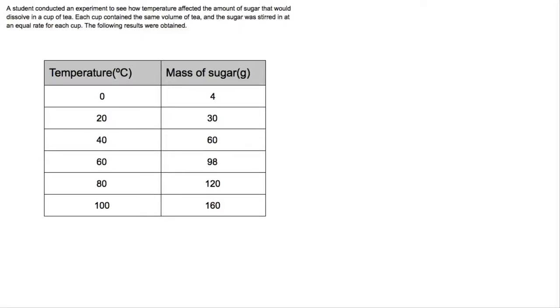In this lesson we're going to look at how to draw a graph from a table of results. A student has conducted an experiment to see how the temperature affects the amount of sugar that will dissolve in a cup of tea.